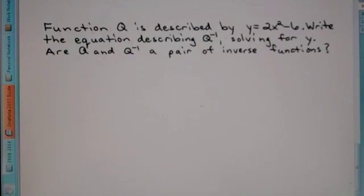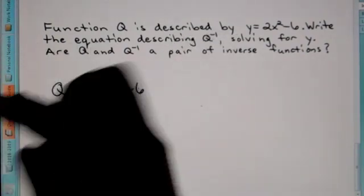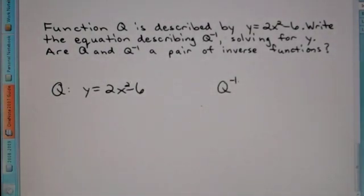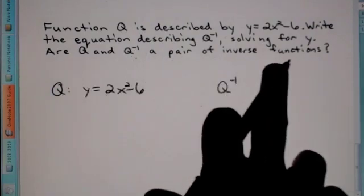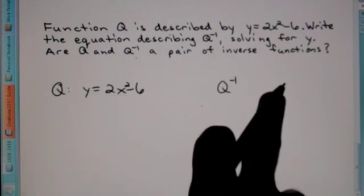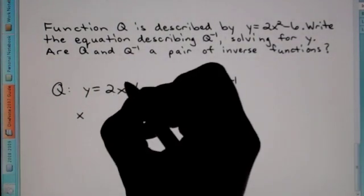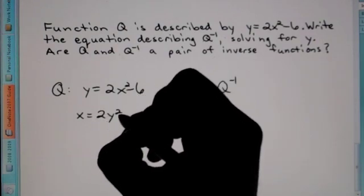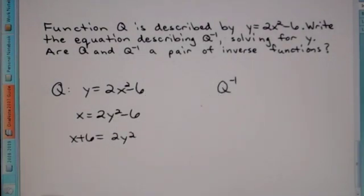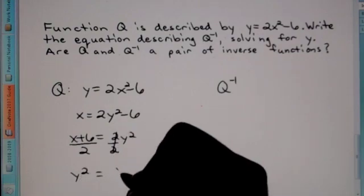Function q is described by y equals 2x squared minus 6. Write the equation describing the inverse of q solving for y, and determine if q and the inverse of q are a pair of inverse functions. The first step is to switch x and y, leaving the exponents, so this becomes x equals 2y squared minus 6. Now get y by itself: add 6 to get x plus 6 equals 2y squared. Then divide by 2, giving y squared equals (x plus 6) over 2.